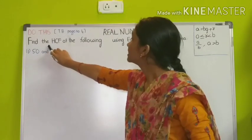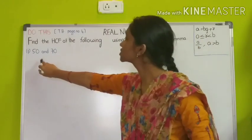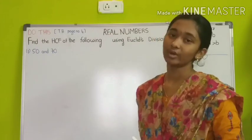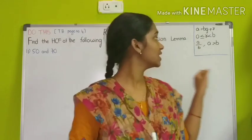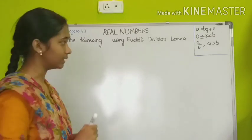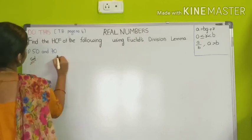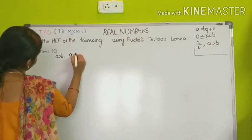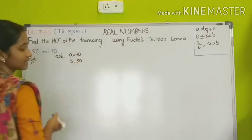The 'Do This' problem says: find the HCF of the following using Euclid's division lemma. The first question is 50 and 70. So we need to find the HCF of 50 and 70. First we need to know what is A and what is B. Since A is always greater than B, the greater number becomes A and the smaller number becomes B. So A is equal to 70 and B is equal to 50, since 70 is greater than 50.